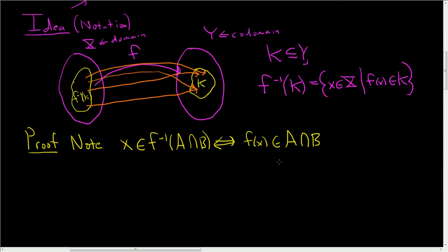So if F of X is in the intersection, then X is in the inverse image of the intersection. And if X is in the inverse image of the intersection, then F of X is in the intersection. That's a lot to say.